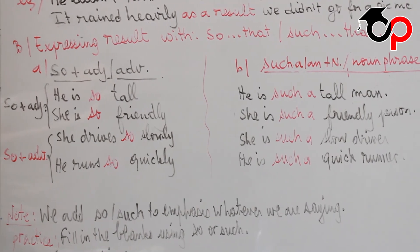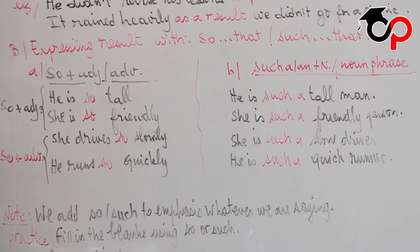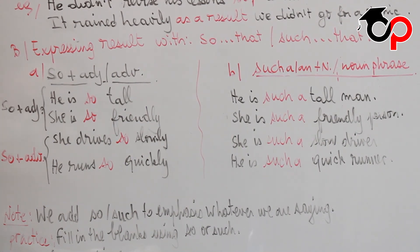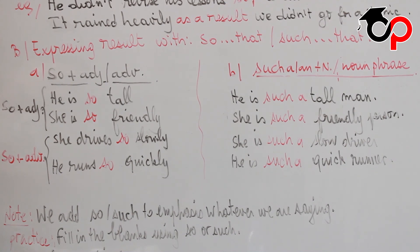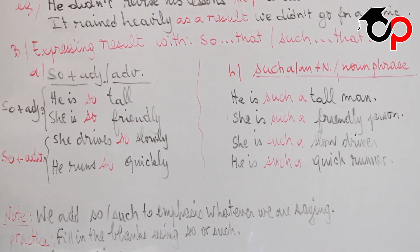We have so plus adjective or adverb. Example: he is so tall — tall is an adjective. She is so friendly — so plus adjective. She drives so slowly — slowly is an adverb. He runs so quickly. So we have so plus adjective or adverb.